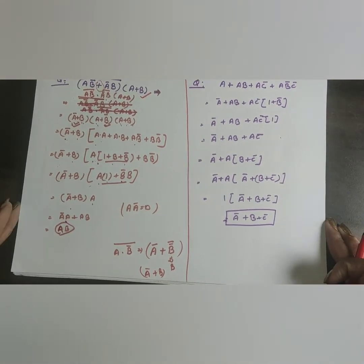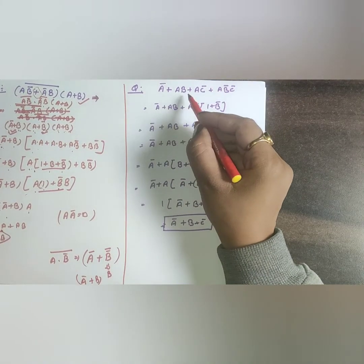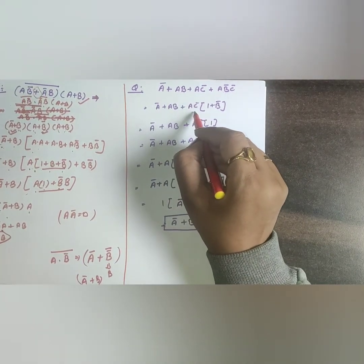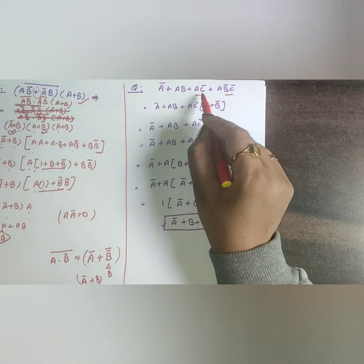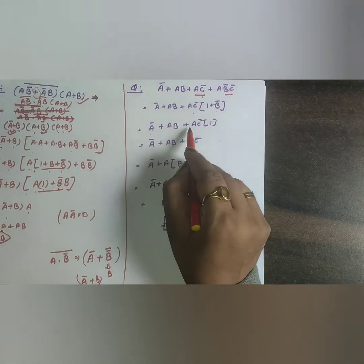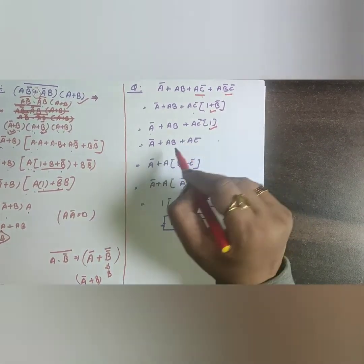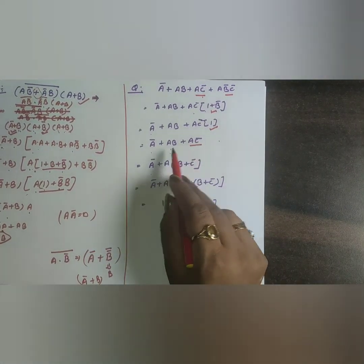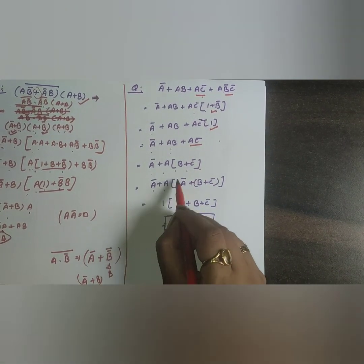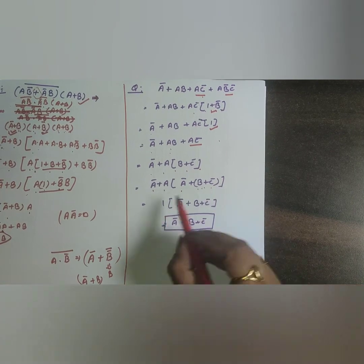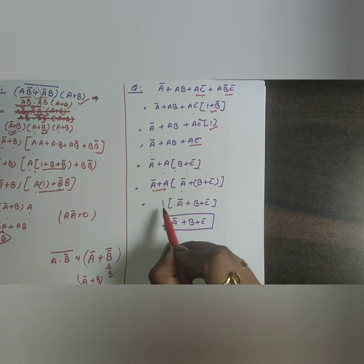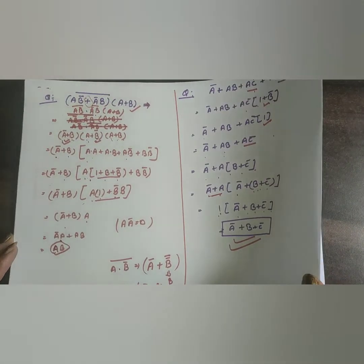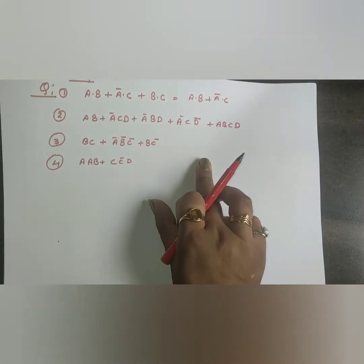Another example: Simplify Ā + AB + AC̄ + ĀB̄C. Factor AC̄ as common from the third and fourth terms: AC̄(1+B̄). Since 1+B̄=1, we get Ā + AB + AC̄. Now factor A from AB and AC̄: A(B+C̄). Then Ā + A(B+C̄) = Ā + B + C̄ by the absorption rule. That is the simplified answer.